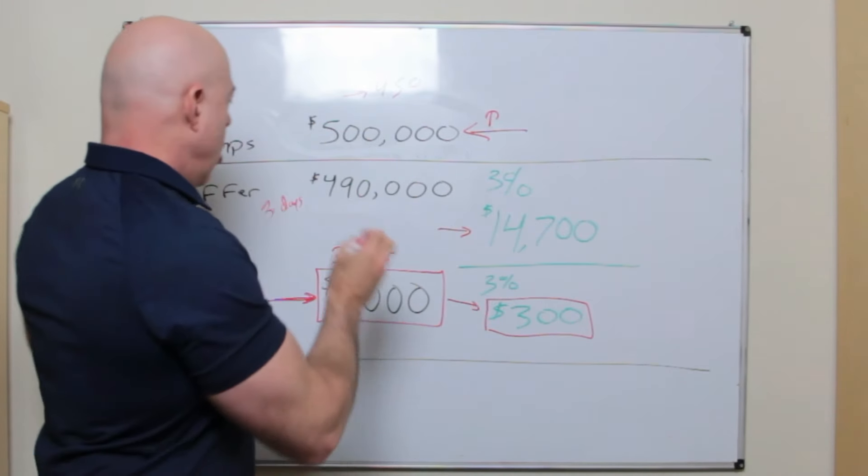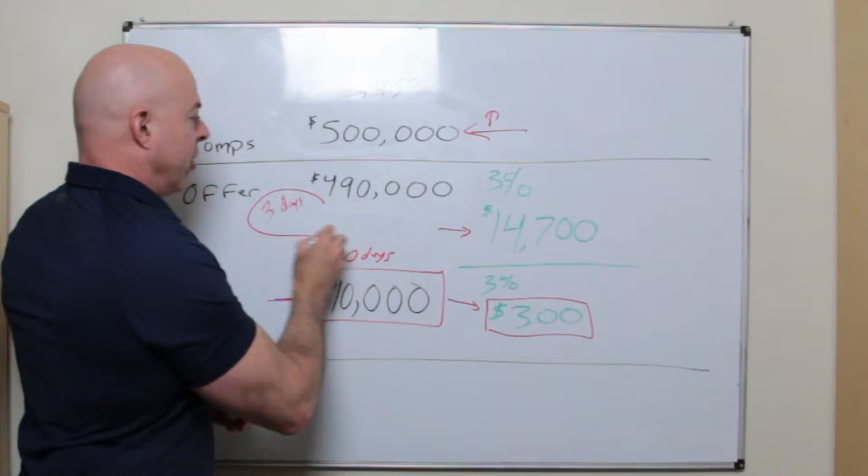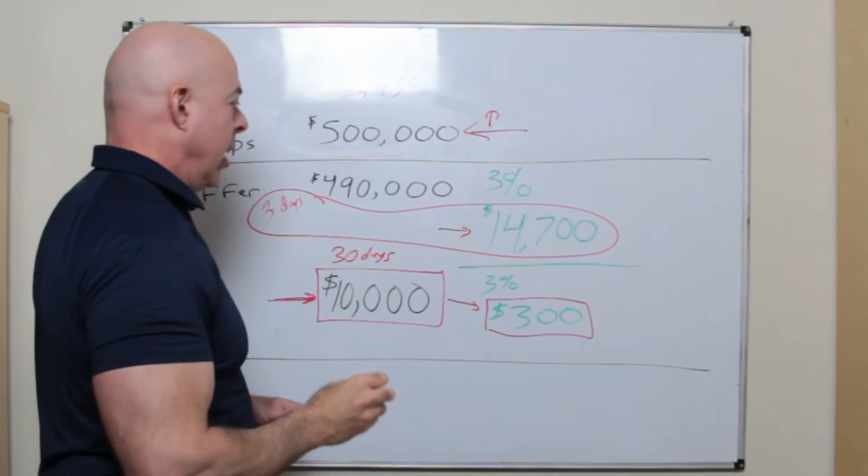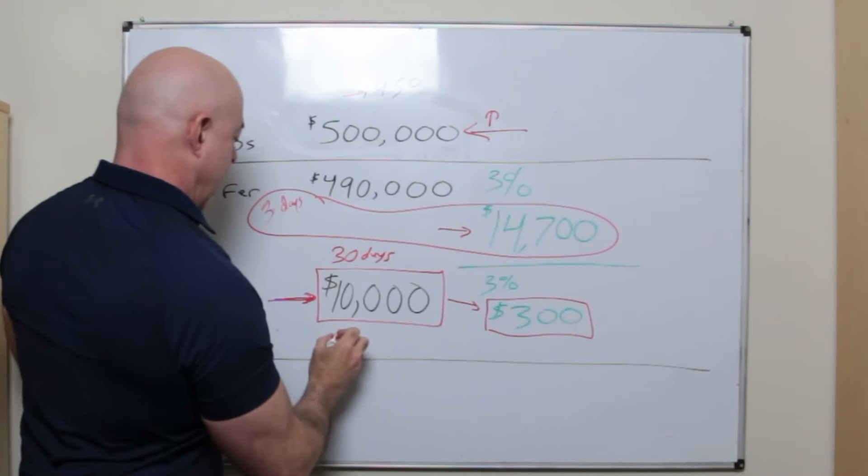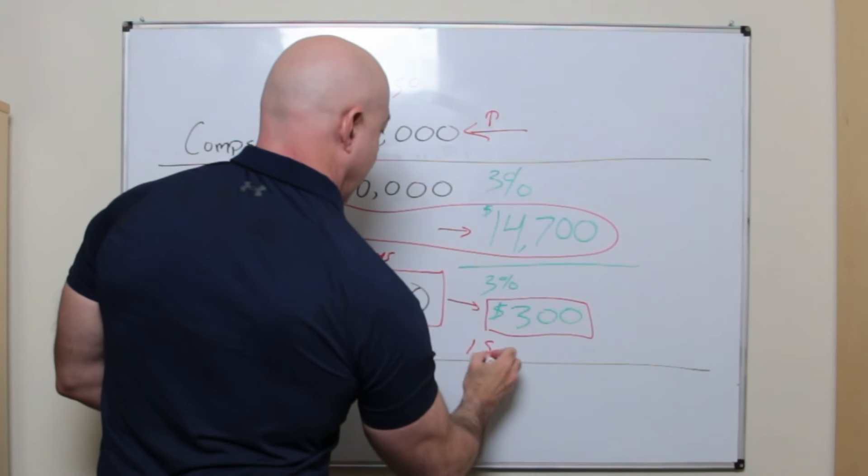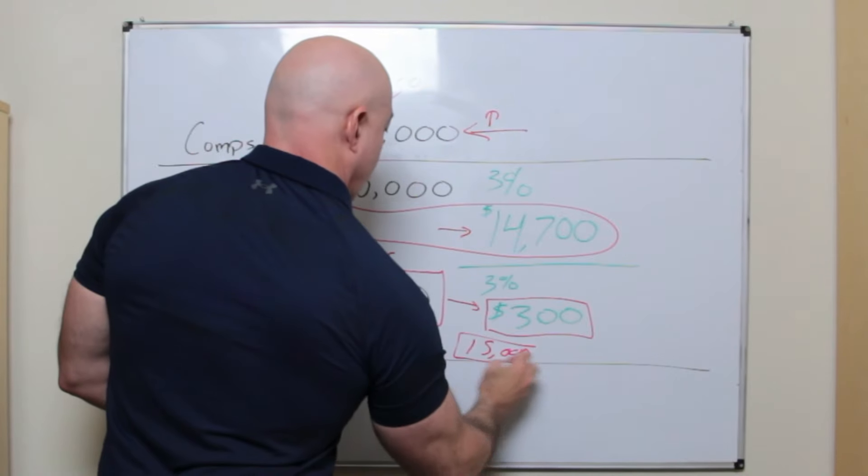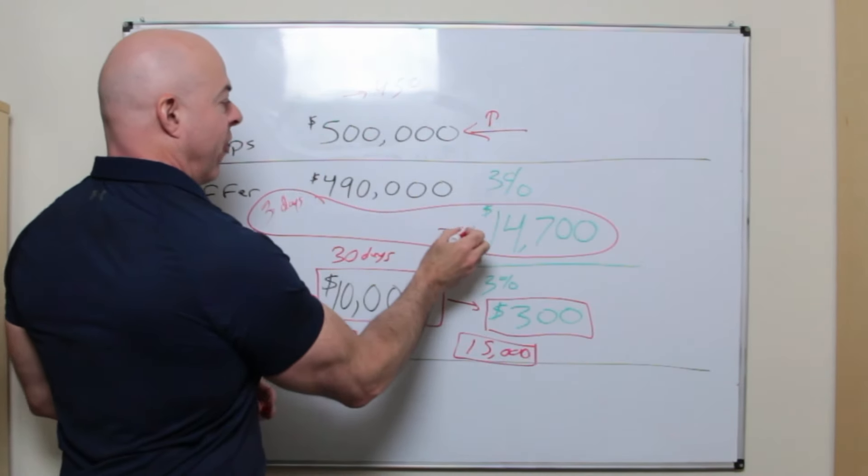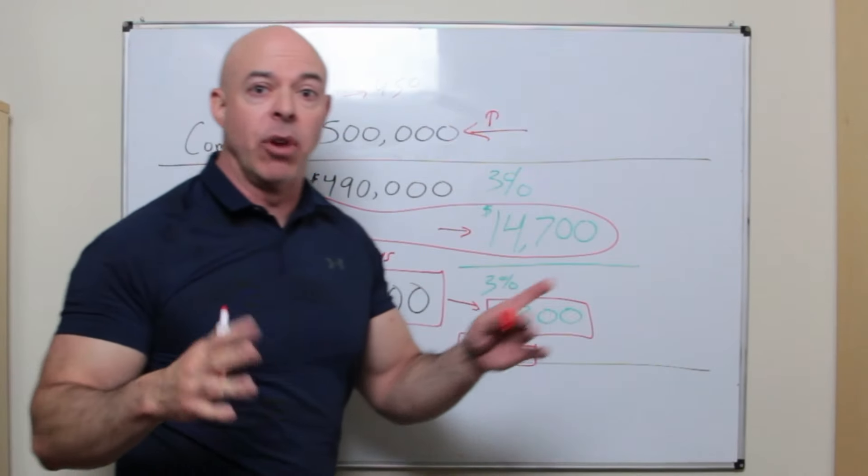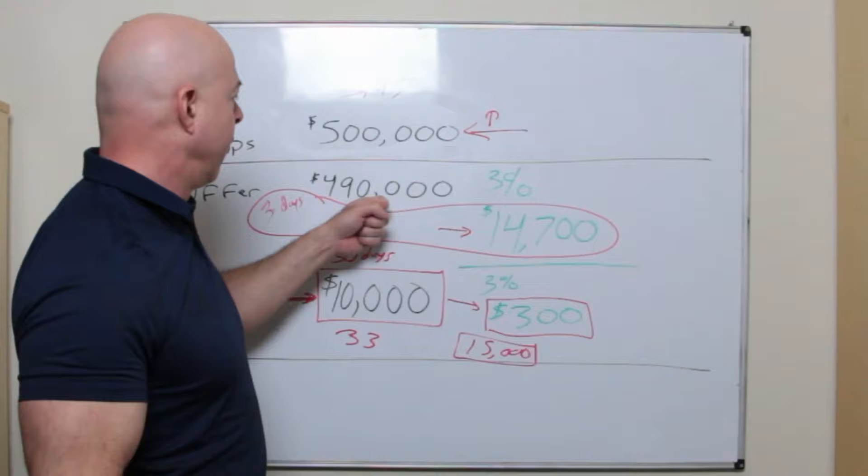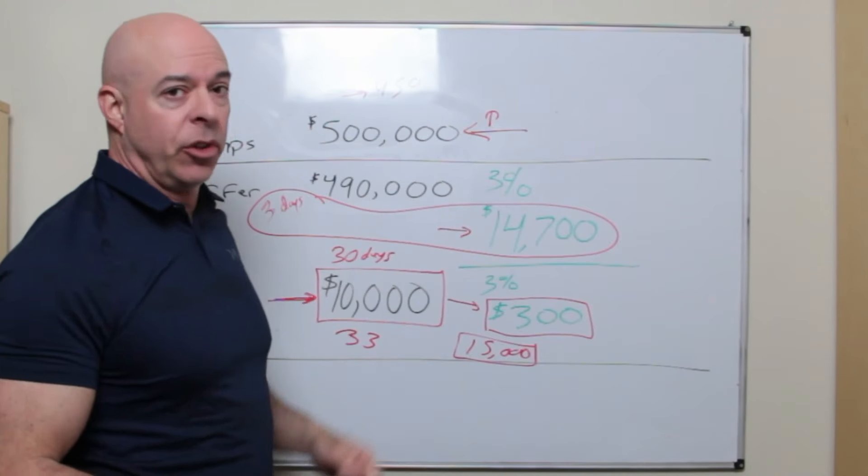So they are going to work for three days in this example and get their $14,700. Or they could work for 33 days and get $14,700 plus three, $15,000. Well, opportunity costs would say they just want to get that $14,700. So they're going to say, just take it. Great offer. Buyer's good. They can do it. We're going to close quickly. You're going to get your $490,000 and then they'll take their $14,700. They'll take off.